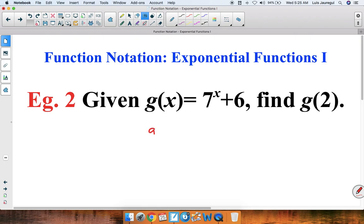That gives us g(2) = 7^2 + 6. Now, we need to use the order of operations, so we need to evaluate the part with the exponent first. So we can rewrite g(2) = 7^2, which is 7 × 7 + 6.